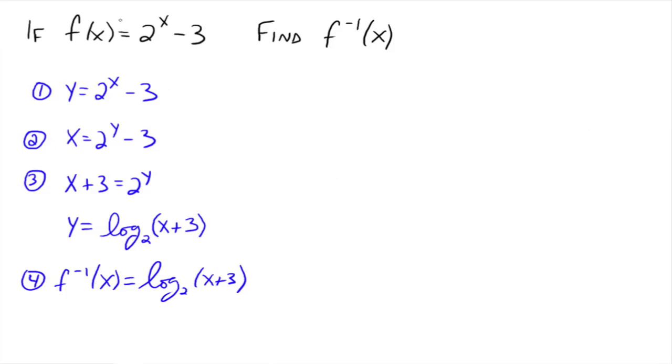And we now have the inverse. This function down here is the inverse of this function up here. If you were to graph 2 to the x minus 3 and then graph log base 2 of x plus 3, graph those two functions, they would be symmetrical with respect to the line y equals x. You should try that in your calculator. See how that works. Put this in as y1. Put this one in as y2. And for y3, put in y equals x. And these two should be symmetrical with respect to that y equals x line.